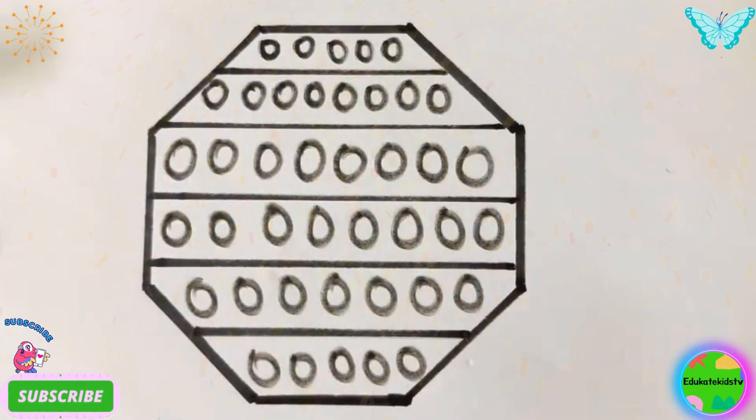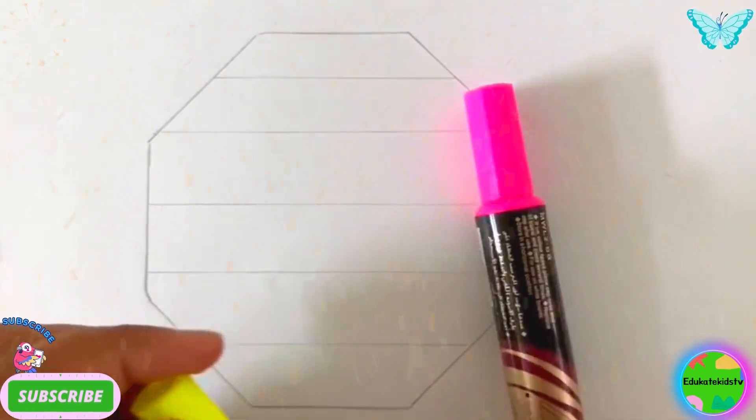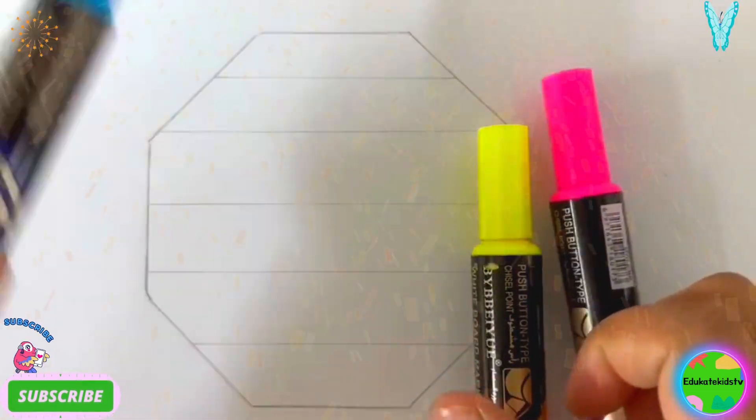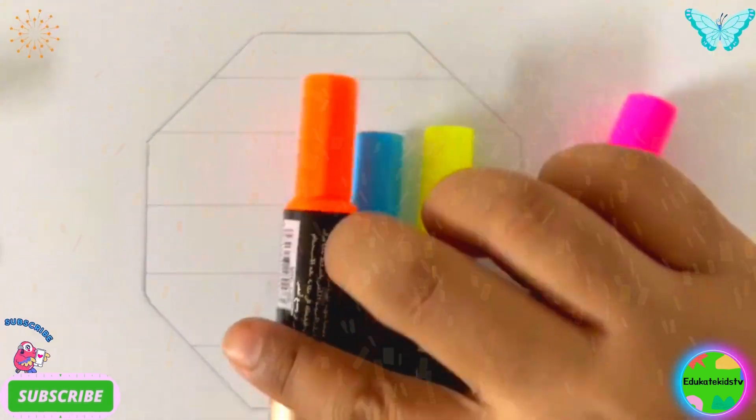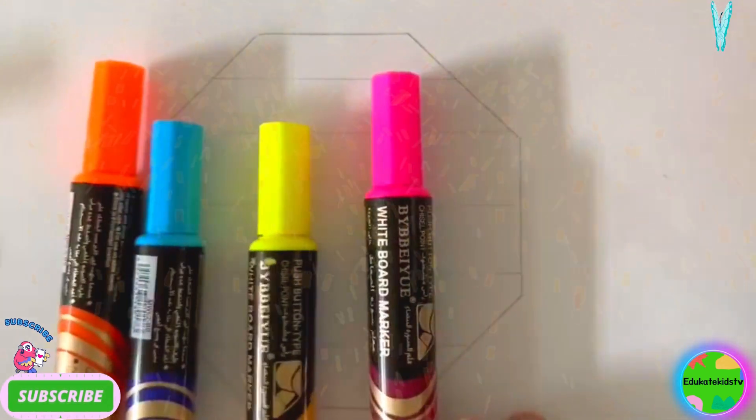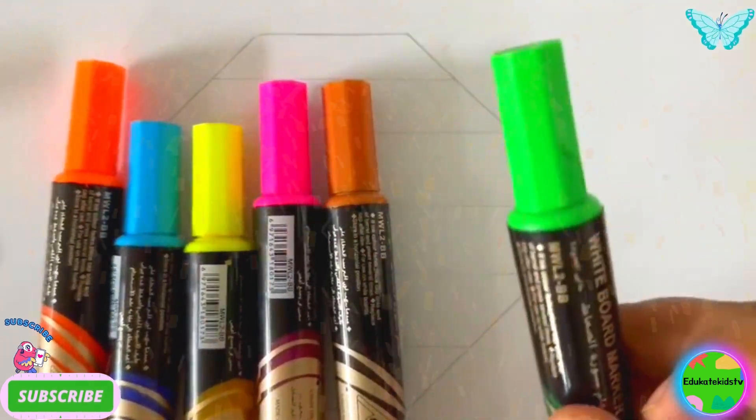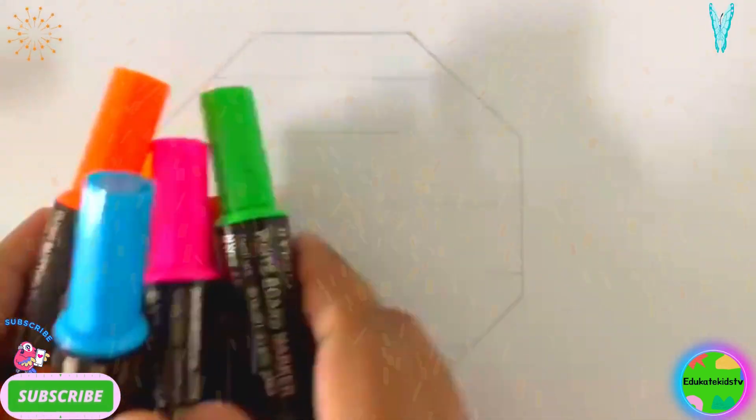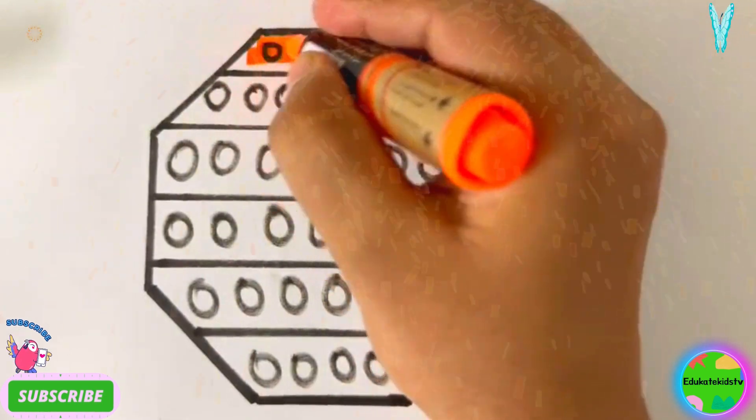Now I will color it with different colors. Pink color, yellow color, blue color, orange color, brown color, green color. Hooray! Now what is this? Do you know it? First I will take orange color. Wow! Nice!